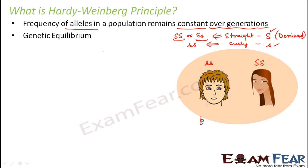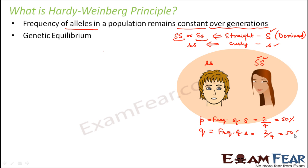So p denotes the frequency of capital S. What is the frequency of capital S? It occurs two times out of four, so it is two out of four, which is 50 percent. And what is the frequency of small s? Let us denote that by q. That is also two out of four, which is 50 percent. So frequency of one allele plus the frequency of the other allele is 50 percent plus 50 percent, that is 100 percent, which means one. So p plus q is equal to one.